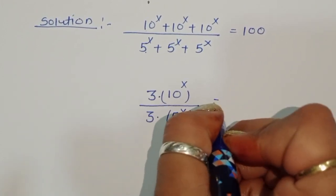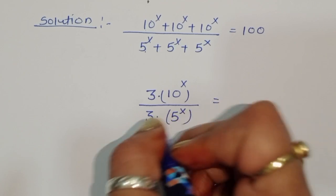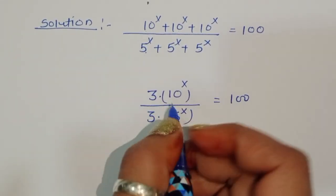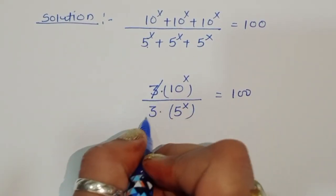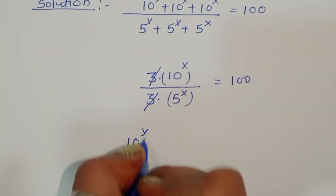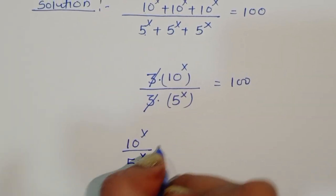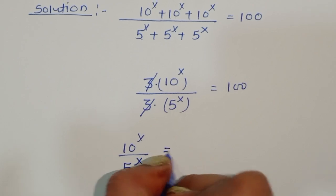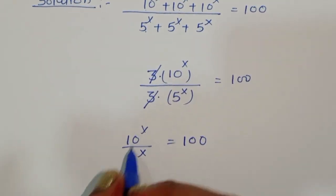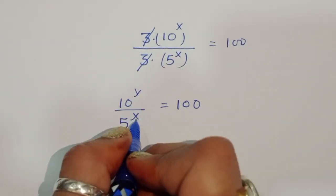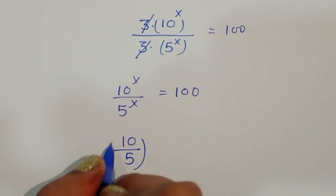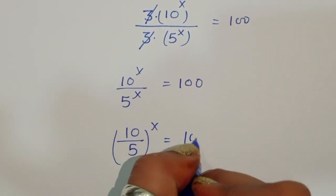Now, 3 times 10 power x divided by 3 times 5 power x is equal to 100. The 3 cancels from numerator and denominator, so we get 10 power x divided by 5 power x is equal to 100. We can take the common power, giving us 10 divided by 5, to the whole power x, equal to 100.